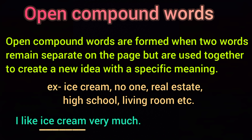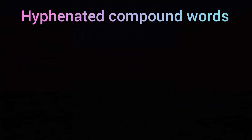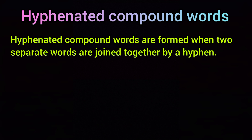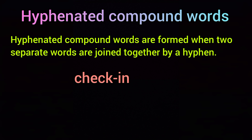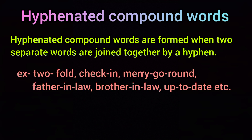There are many open compound words in English and they have enriched vocabulary. The third type of compound words are hyphenated compound words. Hyphenated compound words are formed when two separate words are joined together by a hyphen — a dash between two words. Examples include: two-fold, chicken, merry-go-round, father-in-law, brother-in-law, up-to-date.